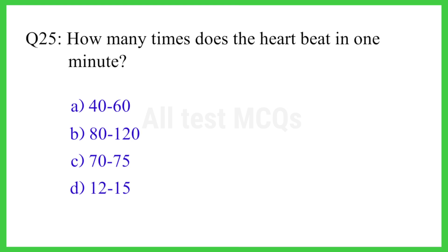Q25. How many times does the heart beat in one minute? The right answer is option C. 70 to 75.